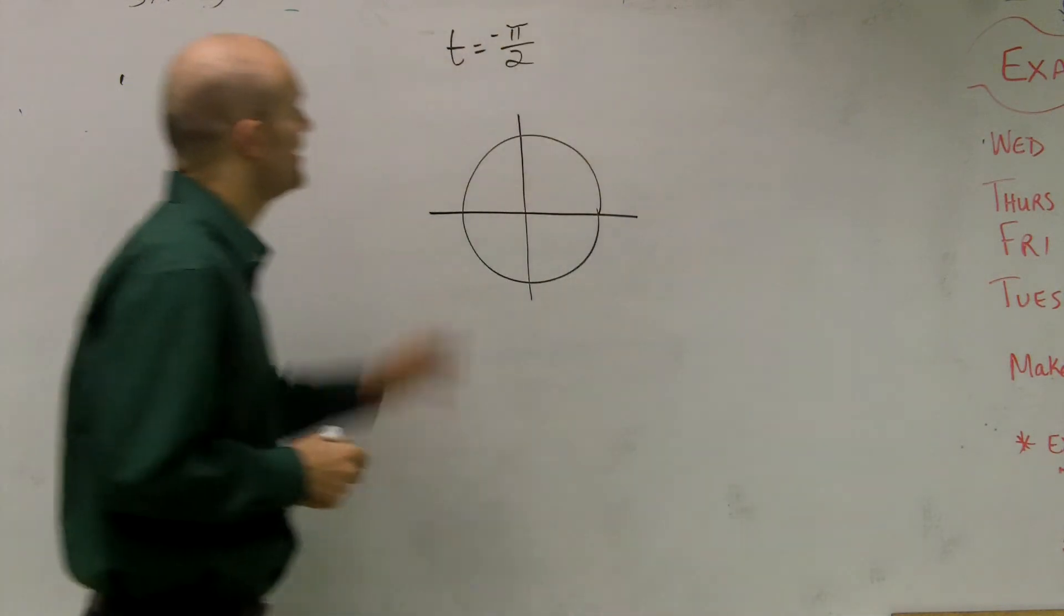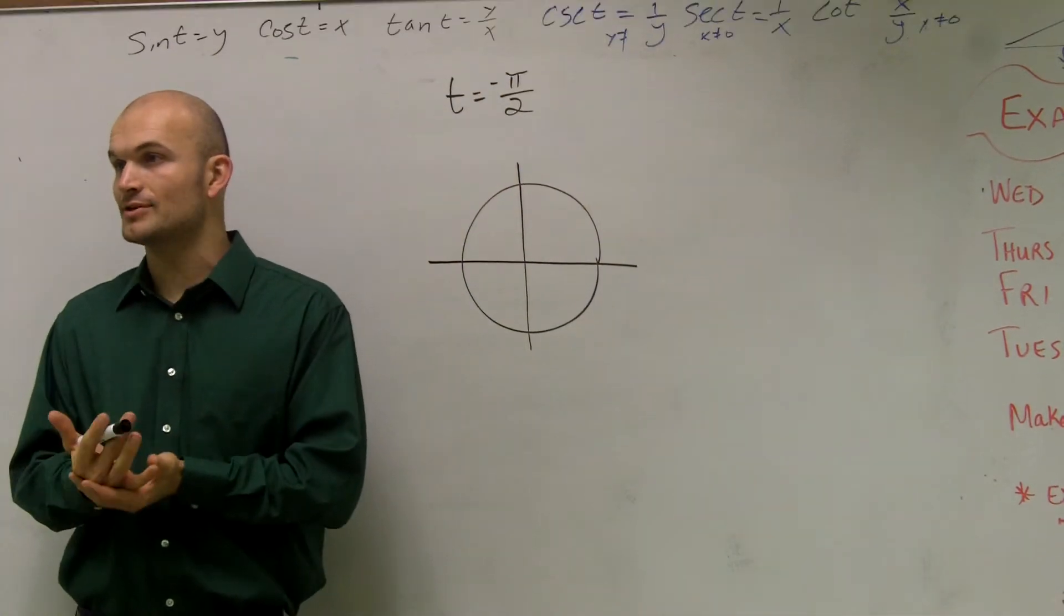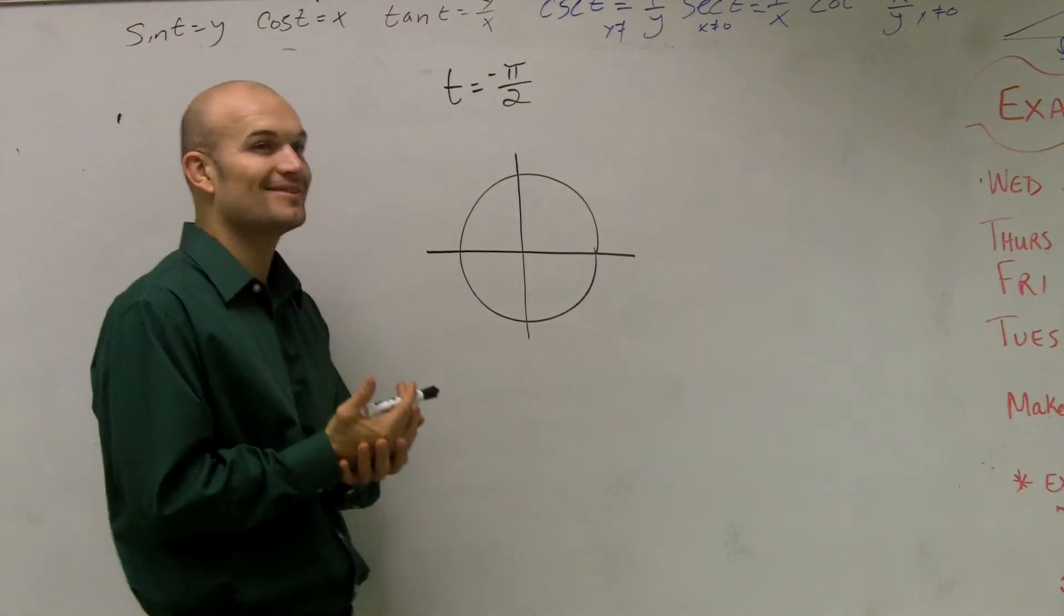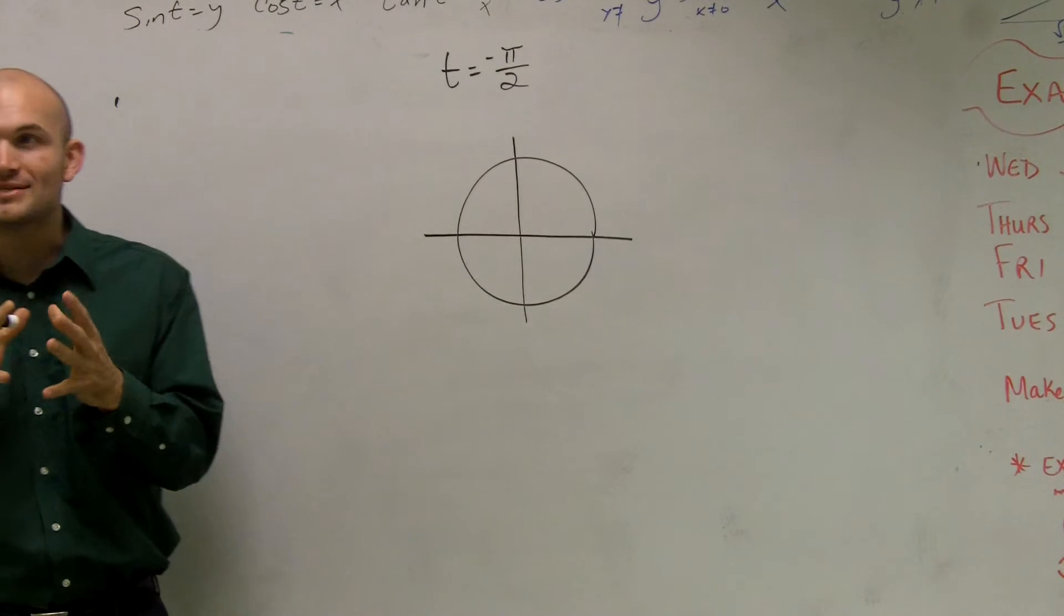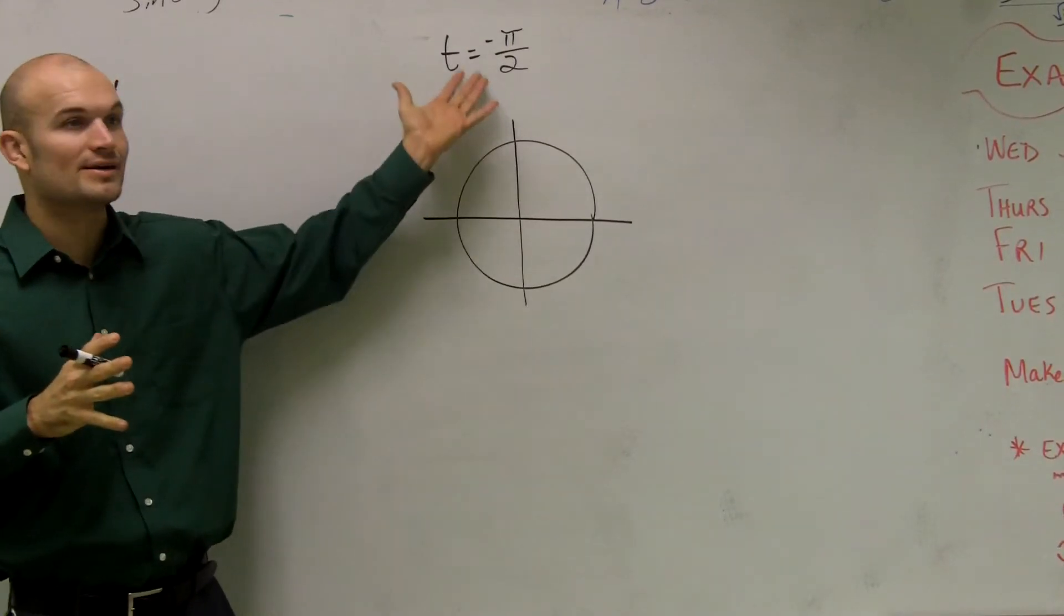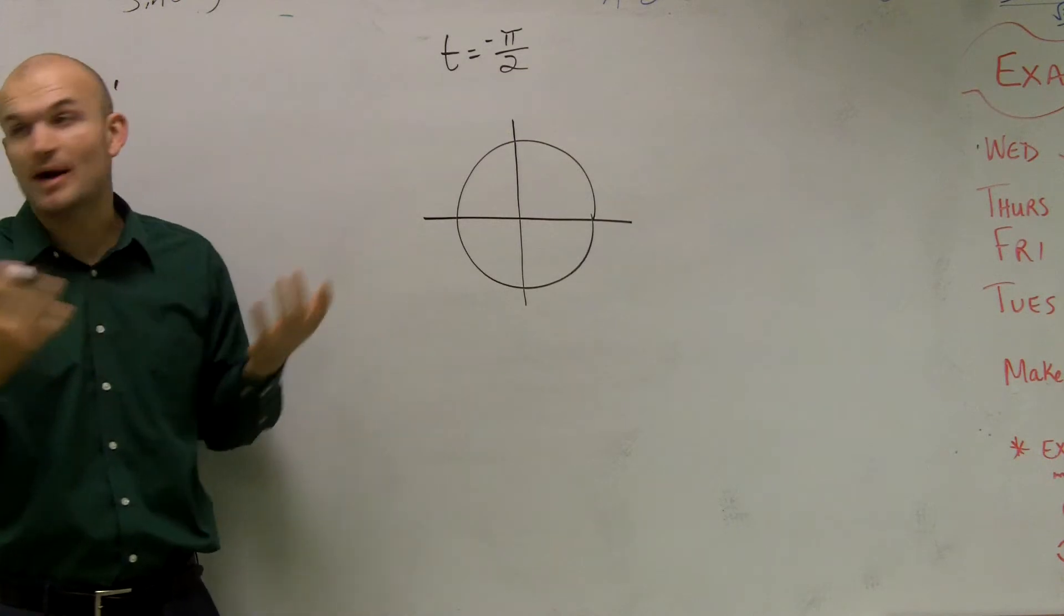Okay, so I want to evaluate for my six trig functions with t as negative pi over 2. To do this, what we need to do is we need to figure out where is our point t. And it says point t is at, t is negative pi over 2.